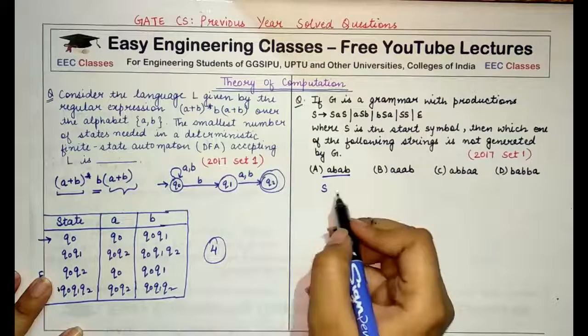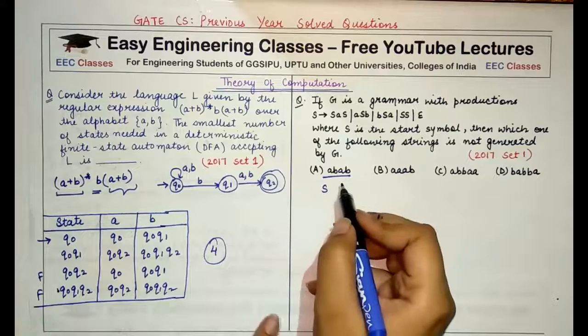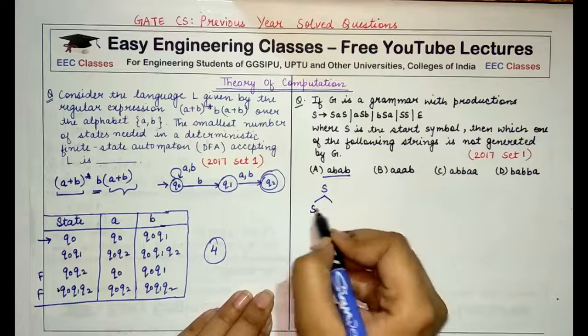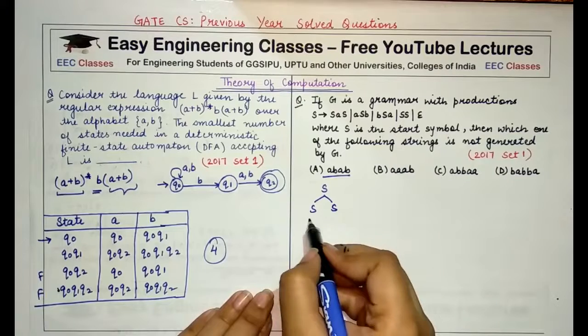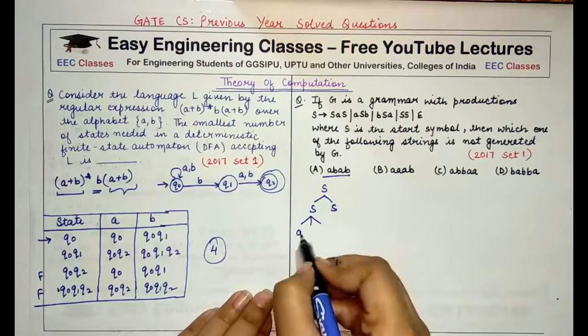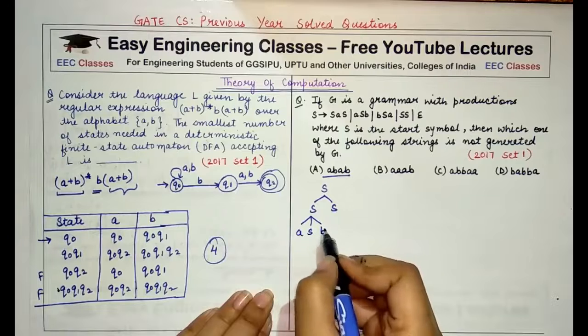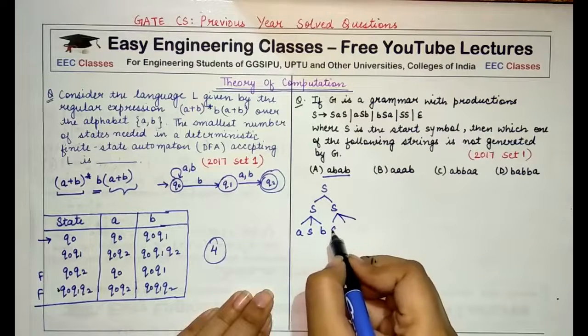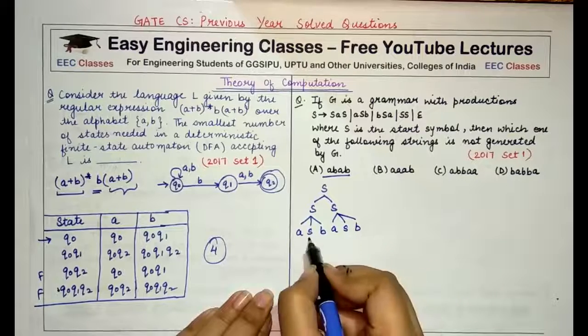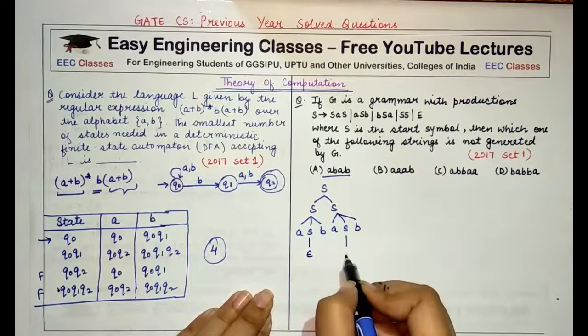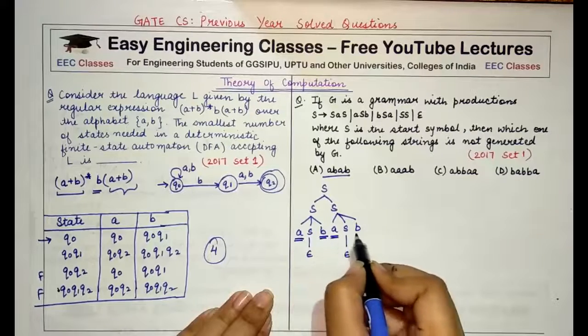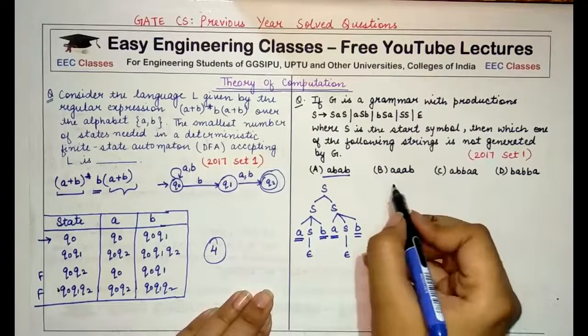I start from the start symbol S, I go to SS, then if I replace it with aSb and again here aSb, and if I replace this with epsilon and this with epsilon, so I get abab. So this is possible.